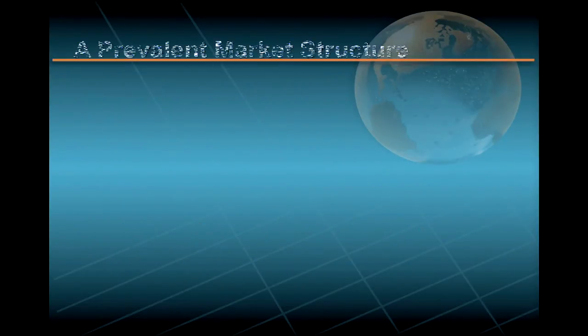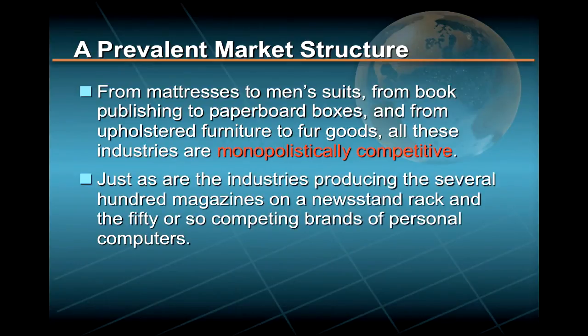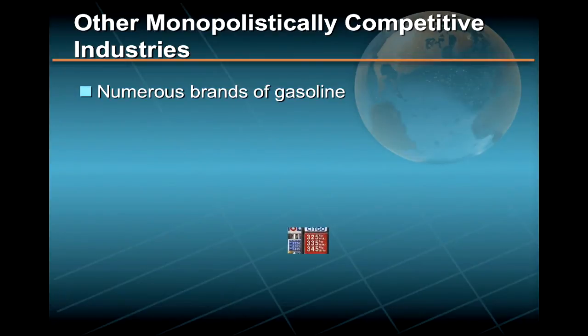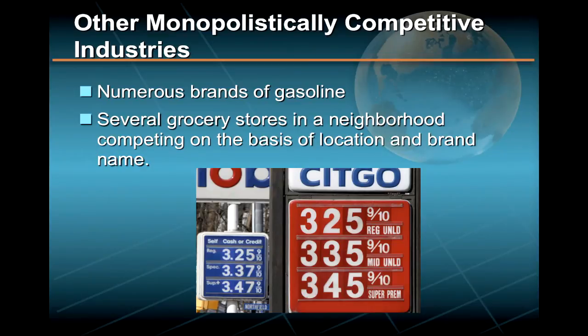Monopolistic competition is one of the most prevalent market structures in the American economy. From mattresses to men's suits, from book publishing to paperboard boxes, and from upholstered furniture to fur goods, all these industries are monopolistically competitive, just as are the industries producing the several hundred magazines on a newsstand rack and the 50 or so competing brands of personal computers. There are also numerous brands of gasoline found at many intersections, and several grocery stores in a neighborhood, all carrying the same products but competing on the basis of location and brand name.